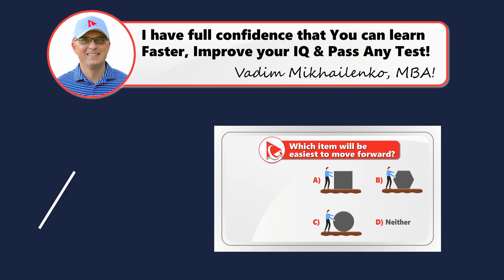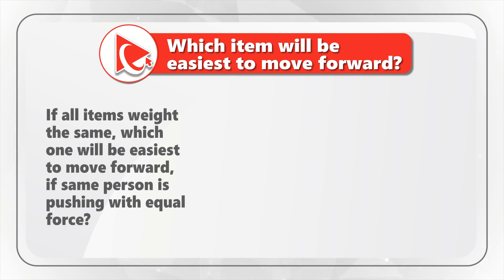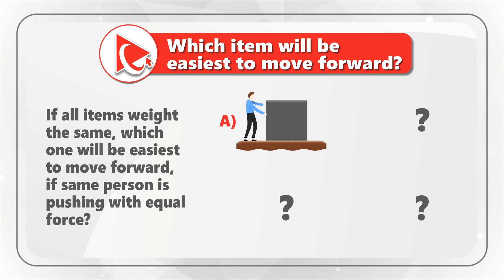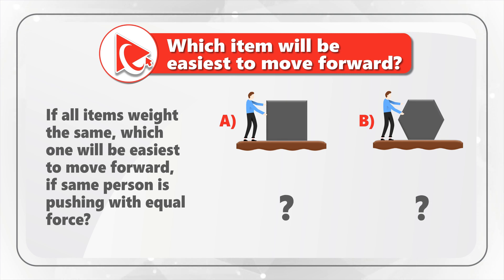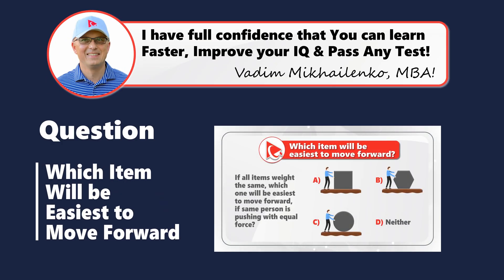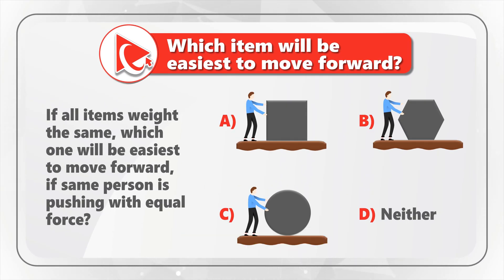Here's an amazing question to test your knowledge of mechanical movement of objects. You are presented with a picture of a person moving an object, and you need to determine — if all objects weigh the same — which one will be easiest to move forward if the same person is pushing with equal force. Select one out of four choices: choice A, a person moving a cube; choice B, a hexagon; choice C, a ball; or last but not least, neither one. I'm moving forward to share with you my version of the solution. Let's analyze all shapes individually.